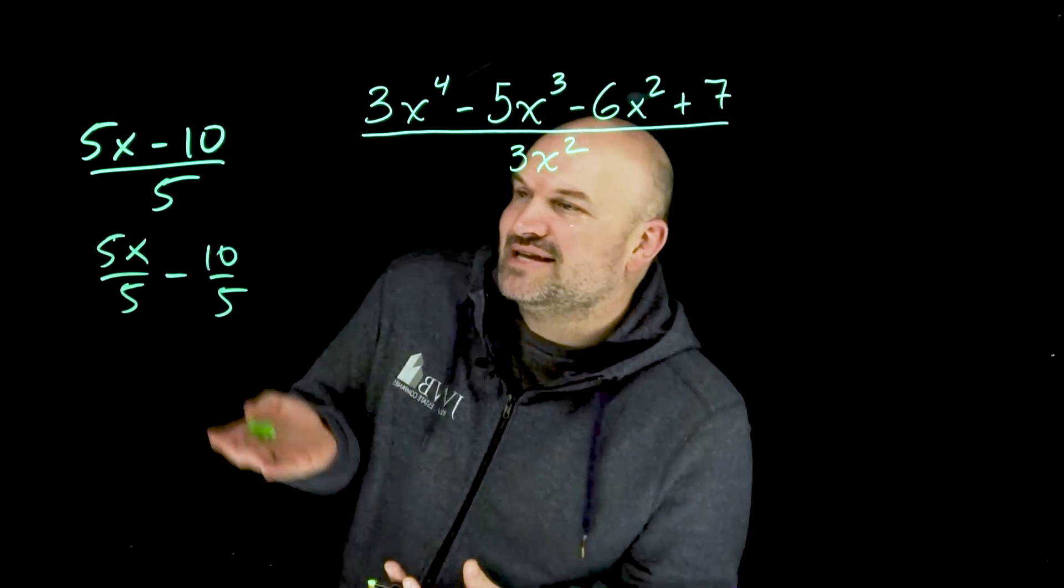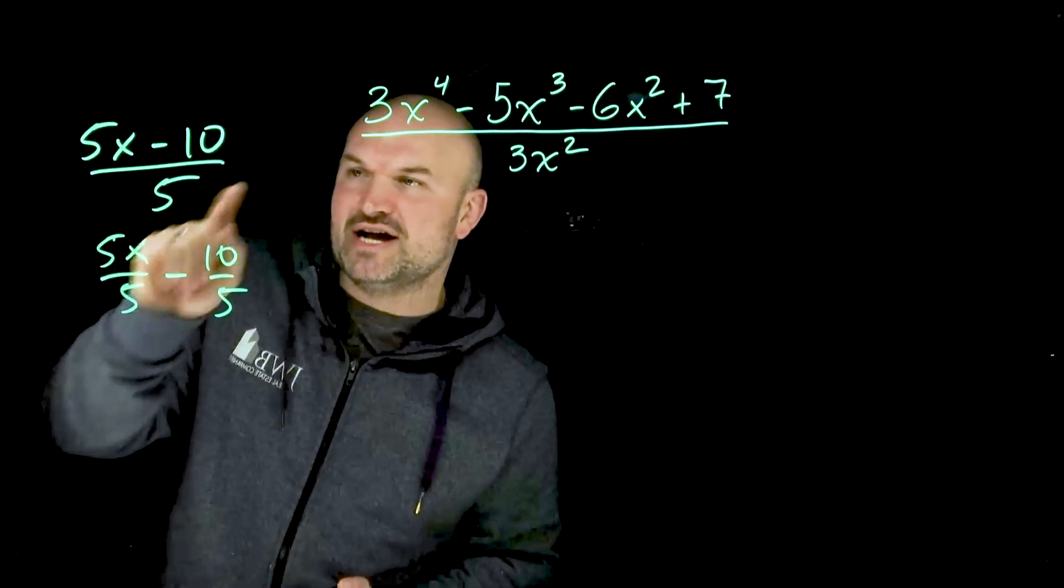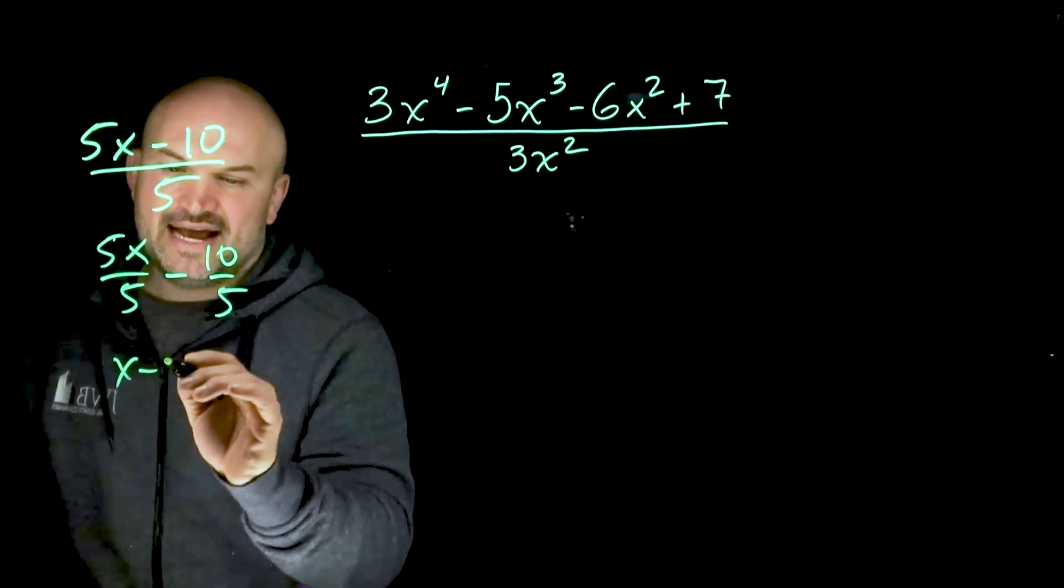It's like the distributive property for division. I can just divide, separate those, since these terms are separated by subtraction, and I only have a single term down here, then I'm simply just going to get x minus 2.